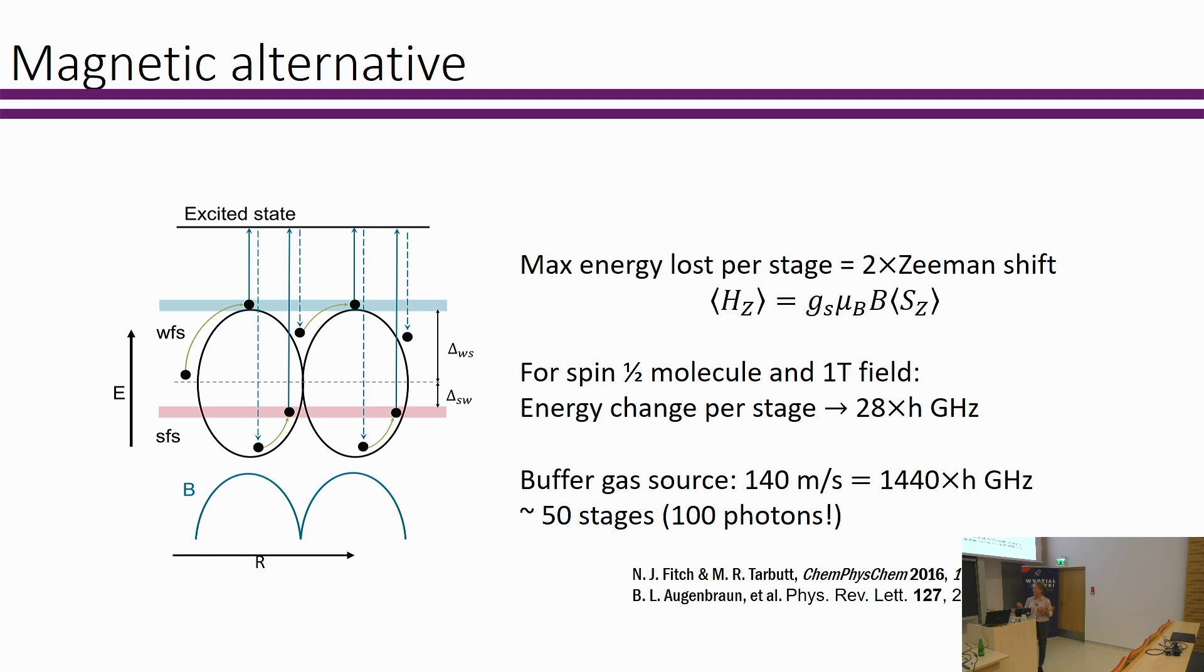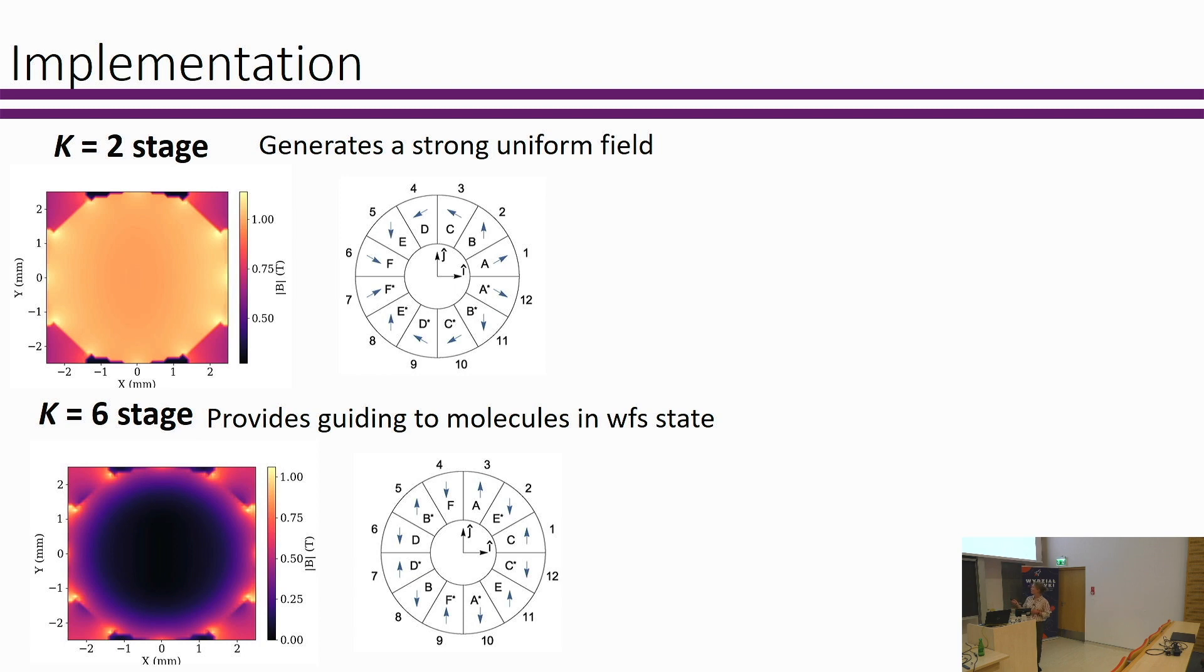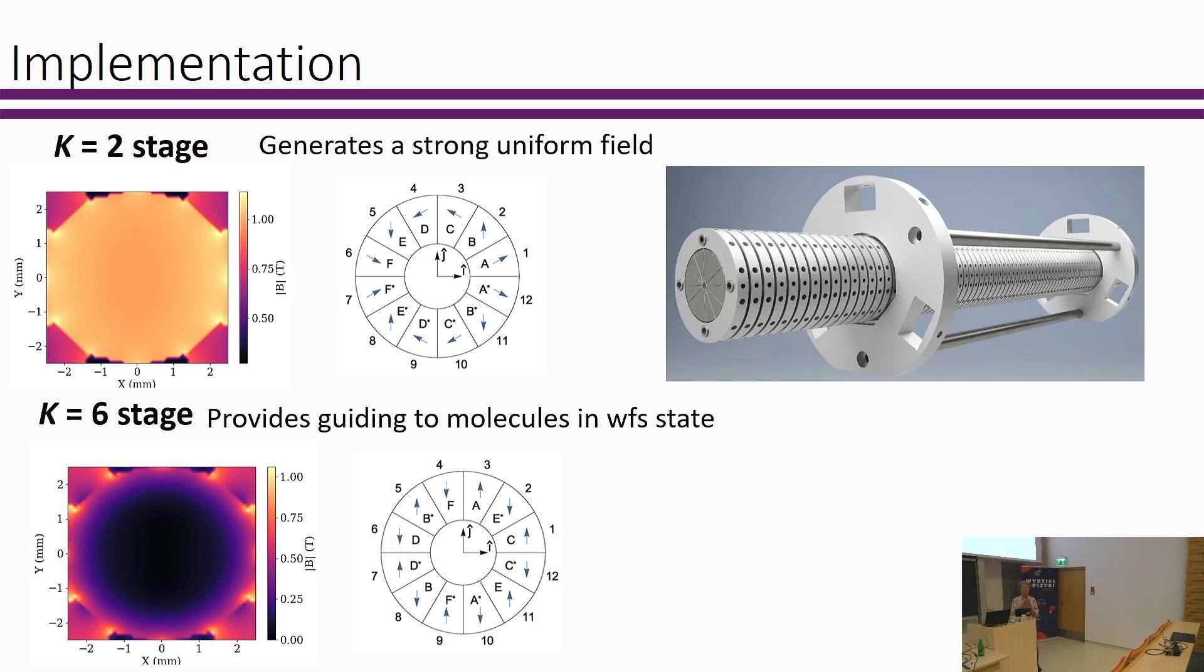So how can we do this in reality? We need to create this spatially varying magnetic field, and we choose to do this with permanent magnet arrays. You can create these Halbach cylinders. If you make them out of these wedge magnets which are magnetized in different directions, you can create in this so-called k=2 symmetry, and you create this very large, uniform magnetic field, which here is pointing along the positive x direction. Then if you align your magnetic wedges in a different way, you can create areas of low magnetic field. We can then interleave these magnetic wedge cylinders and create a decelerator that's going to look something like this.